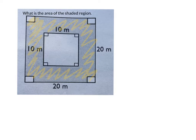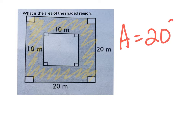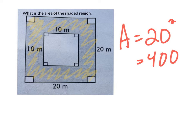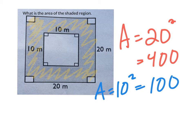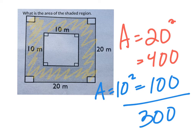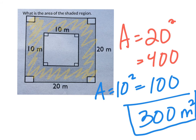So we have to find two separate areas. The first area is of the larger square, which is 20 squared, or 400 square meters. And the second area is for the inner square, which is 10 squared, or 100 square meters. So if we subtract those two areas, we get a composite area of 300 square meters.